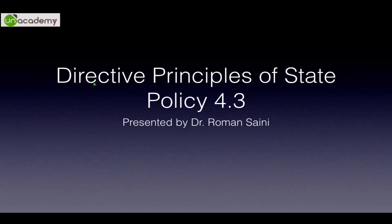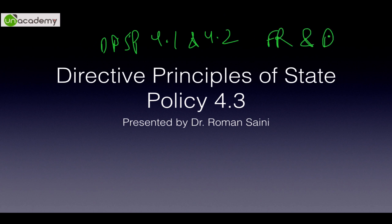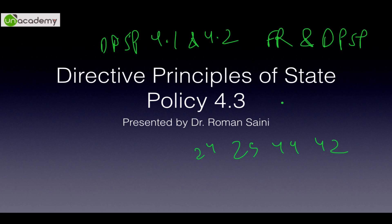Hey guys, I hope you have watched the DPSP parts 4.1 and 4.2 where we dealt with what are DPSP, where do they originate from, the evolution of DPSP, differences between fundamental rights and DPSP, the sanctions behind DPSP, the relationship between fundamental rights and directive principles, the 24th, 25th, 44th and 42nd amendments, and various cases like Champakam Dorayajan 1951, Golaknath 1967, Kesavananda Bharati 1973, and Minerva Mills 1980.